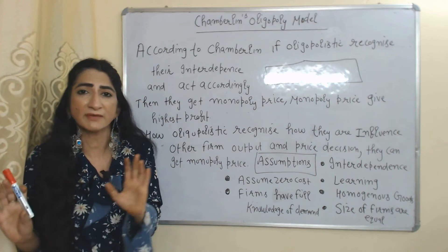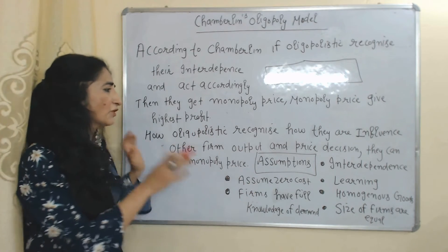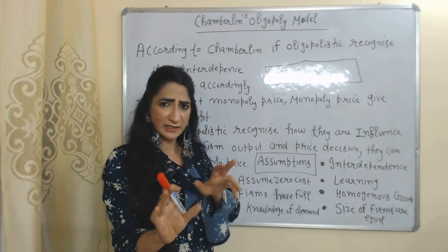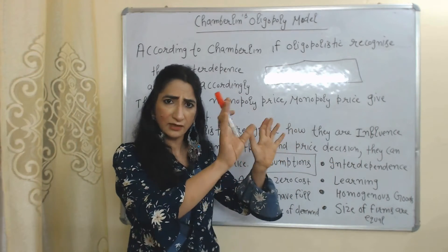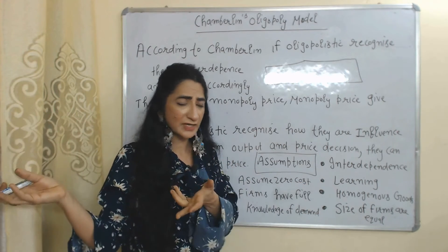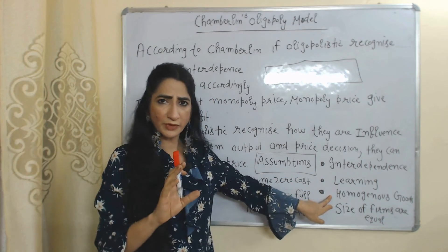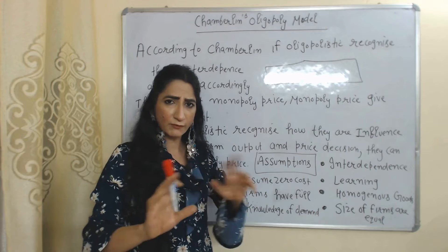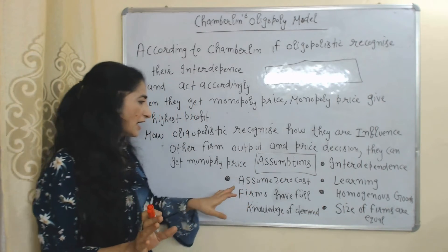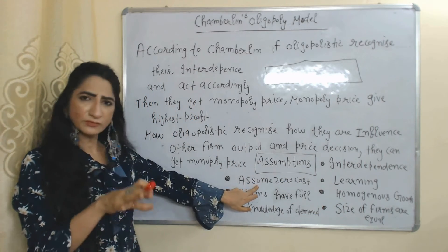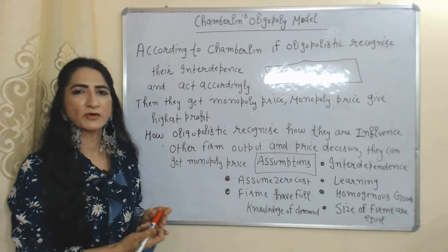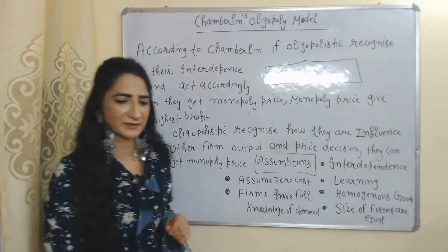The assumptions of this model are: interdependency — each firm recognizes their interdependency and acts accordingly; learning — each firm learns from their past behavior; homogeneous product — products of firms are exactly the same; size of firms are equal; we assume zero cost for every firm; and firms have full knowledge about market demand.